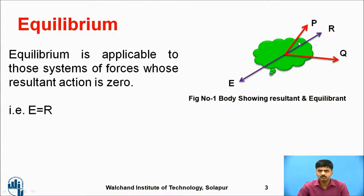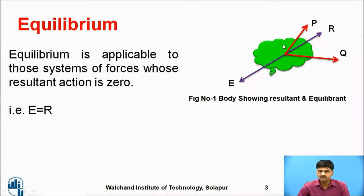Before that we focus on this particular figure, showing resultant and equilibrium. Earlier we discussed what is meant by resultant and equilibrium. Consider this particular system of forces P and Q — these two forces are present. To keep this particular body in a rest condition is nothing but equilibrium. To keep these forces in equilibrium we require one more force — the additional force, that is your resultant.